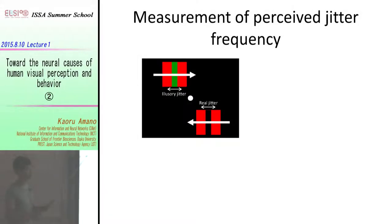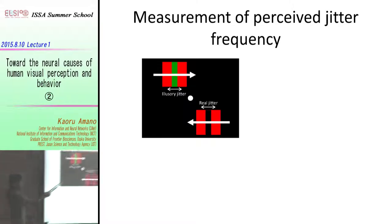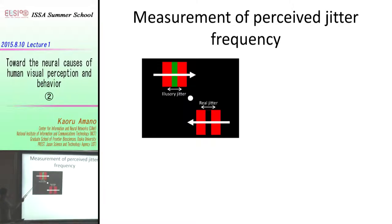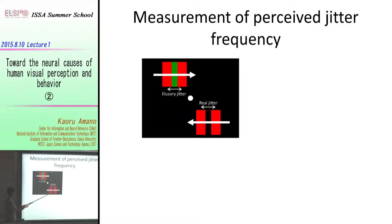For the measurement, this is how we measure the passive jitter frequency. Here we present an illusory jitter stimulus in the upper visual field and a physically real jitter stimulus in the lower visual field. So this is the illusion that the brain creates, and this is the jitter that the computer generates.